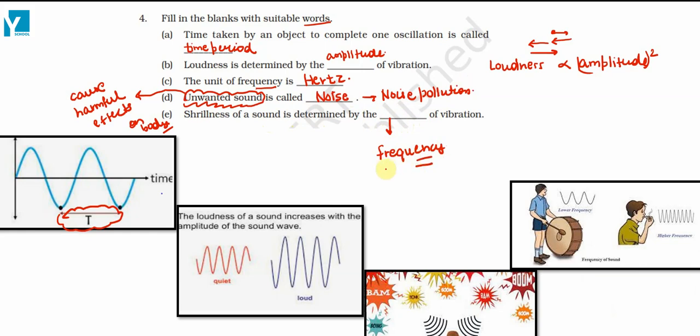The more shrill a sound is, the higher its frequency. For example, a whistle's sound has more frequency and more shrillness as compared to the sound produced from a drum. It is extreme compared to the sound of a drum.